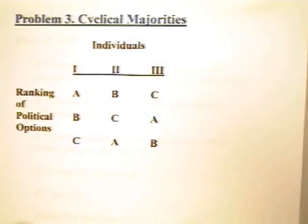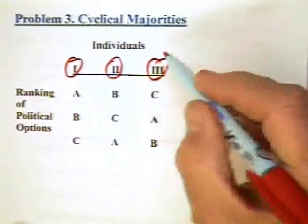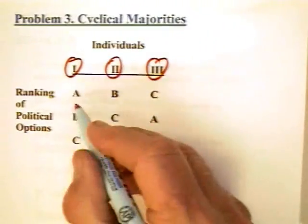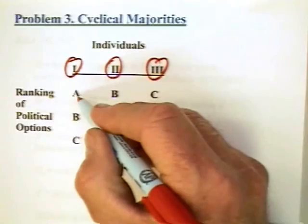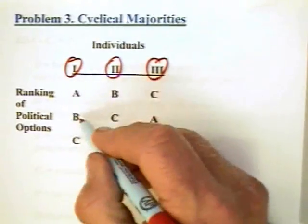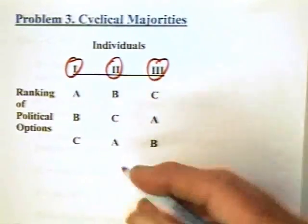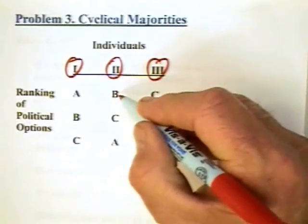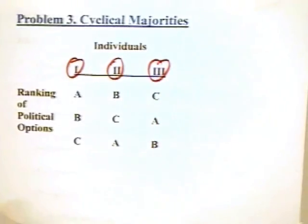Here we have three individuals: one, two, and three. And these individuals have three political options before them: A, B, and C. A is ranked highest for individual one, then second is B, then C. Individual two prefers B at the highest priority, then C, then A. Individual three prefers C first, then A, then B.